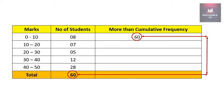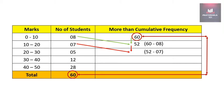For the next more than cumulative frequency we will take 60 and 8, so 60 minus 8 is 52. For the next more than cumulative frequency we will take 52 and 7, so 52 minus 7 is 45.